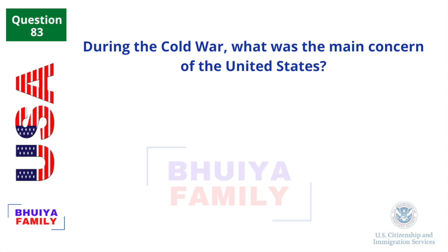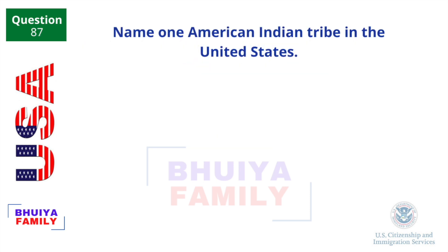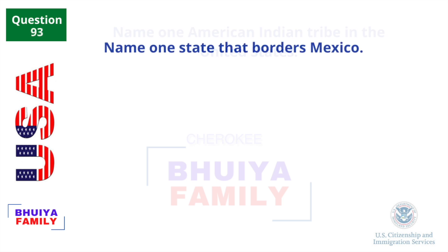During the Cold War, what was the main concern of the United States? Communism. Name one American Indian tribe in the United States. Cherokee. Name one state that borders Mexico. California.